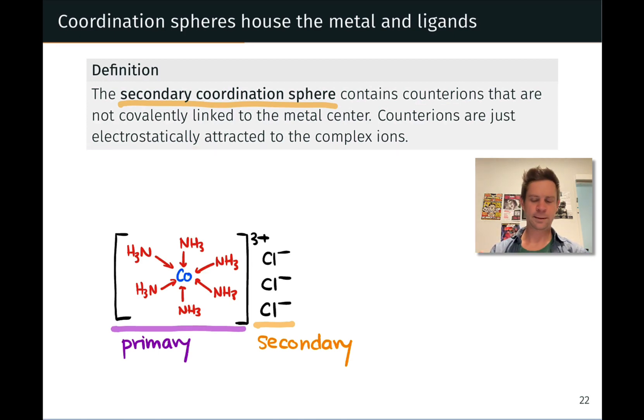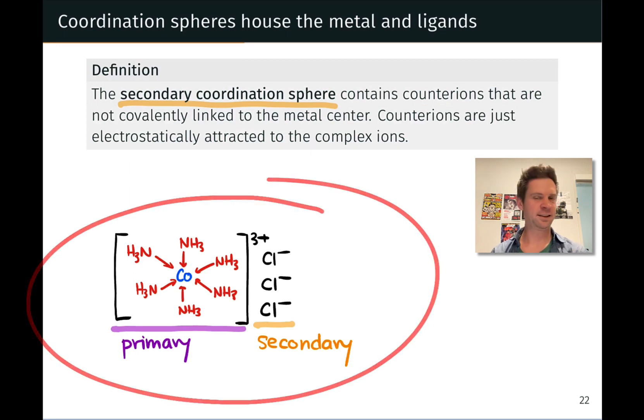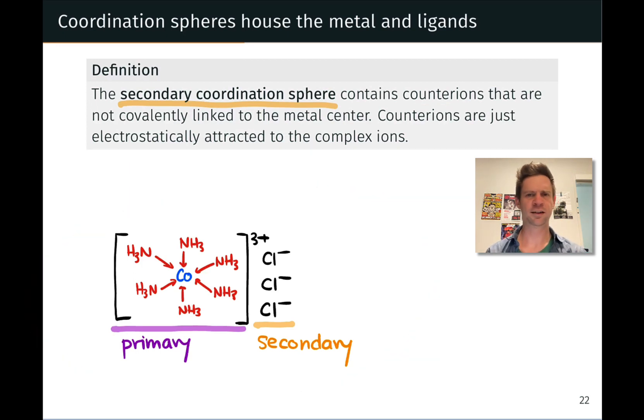So for example, when you take a coordination compound and dissolve it in water, let's say that this complex is water-soluble, which is highly likely because it's an ionic compound, the three chlorides will dissociate and form just hydrated chloride anions in that solution.